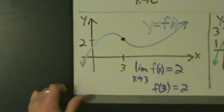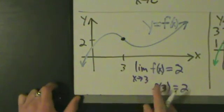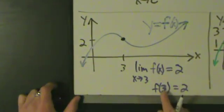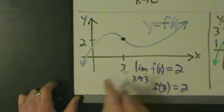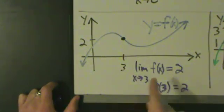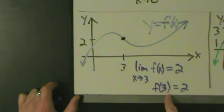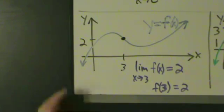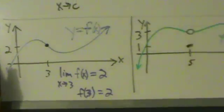So because this limit as x goes to 3 of f(x) equals 2, and because f of 3 equals 2, we say that this function is continuous at x equals 3. Because the limit and the function value are the same when x is 3. So let's come over here and see another example.